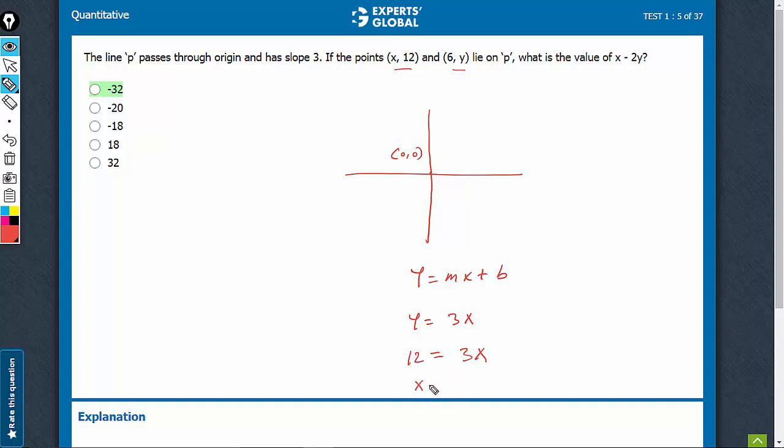Let's put this coordinate on the equation of the line y equals 3x. This tells us that y is equal to 3 into 6, which is 18. So y is equal to 18.